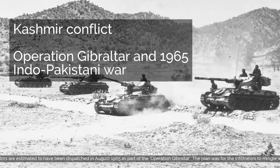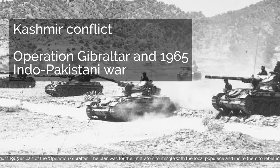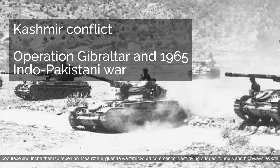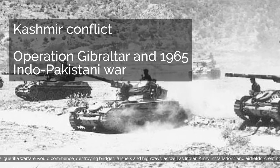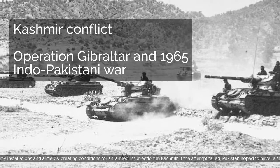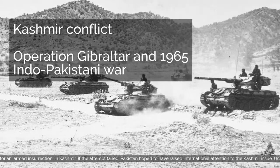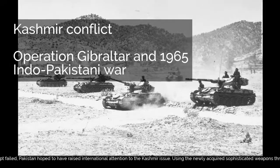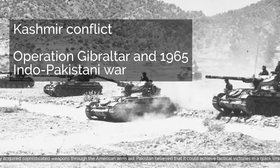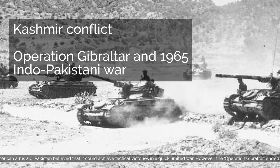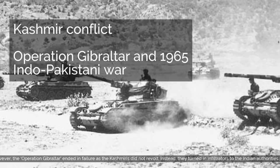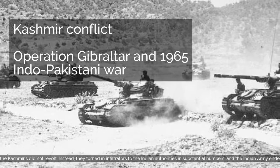The plan was for the infiltrators to mingle with the local populace and incite them to rebellion. Meanwhile, guerrilla warfare would commence — destroying bridges, tunnels, highways, Indian Army installations and airfields — creating conditions for an armed insurrection in Kashmir. If the attempt failed, Pakistan hoped to have raised international attention to the Kashmir issue. Using newly acquired sophisticated weapons through American arms aid, Pakistan believed that it could achieve tactical victories in a quick limited war. However, Operation Gibraltar ended in failure as the Kashmiris did not revolt. Instead, they turned in infiltrators to the Indian authorities in substantial numbers, and the Indian Army ended up fighting Pakistani Army regulars.